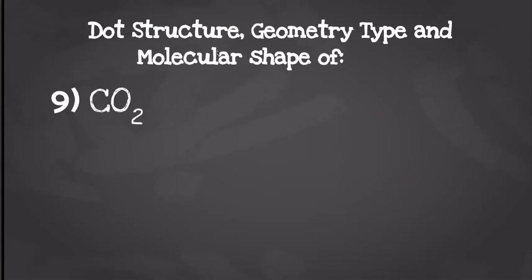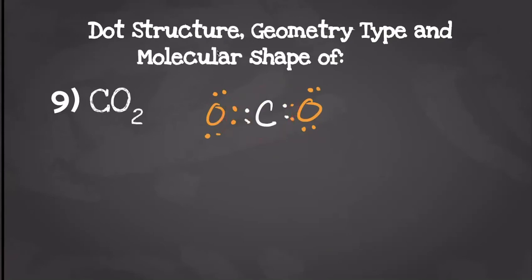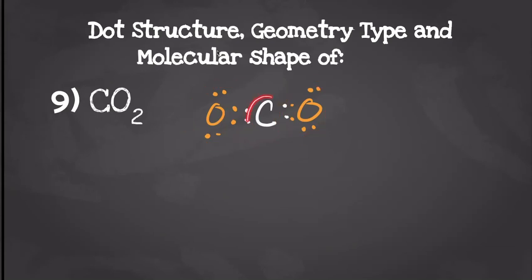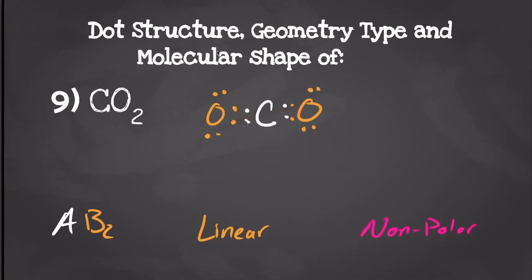Next we have carbon dioxide. Carbon is going to have four valence electrons and oxygen is going to have six valence electrons each. When we draw our dot structure it should give us something like this — carbon is going to be double bonded to each oxygen, allowing it to have eight electrons, and each oxygen is going to have eight as well, so they all have a full octet. We have one center molecule with two things attached to it, giving us a geometry type of AB2 and a linear molecular shape. To find the dipole moment, each oxygen is going to try to pull those electrons towards it equally, so it's going to give us a non-polar molecule.